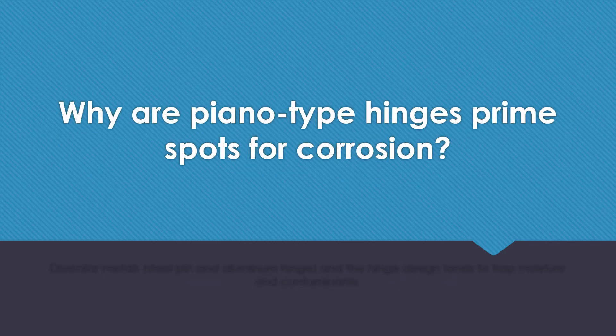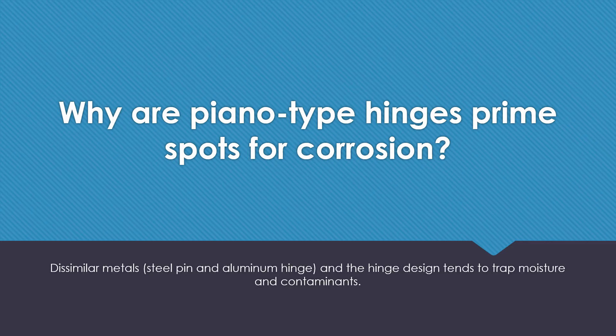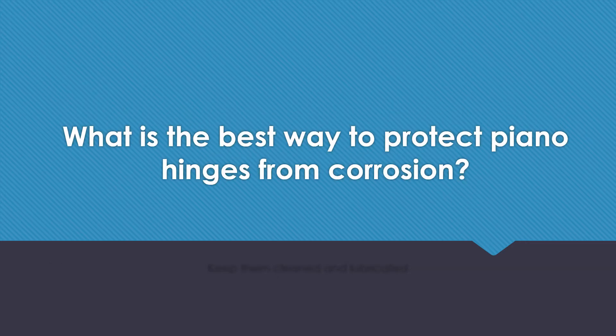Why are piano-type hinges prime spots for corrosion? Dissimilar metals — a steel pin and an aluminum hinge — and the hinge design tends to trap moisture and contaminants. What is the best way to protect piano hinges from corrosion? Keep them cleaned and lubricated.